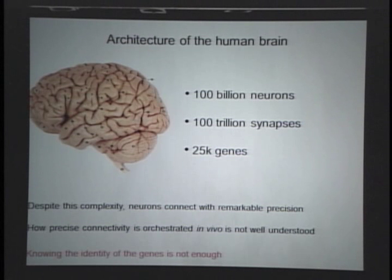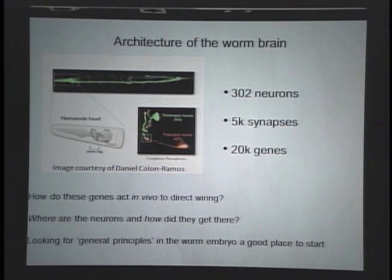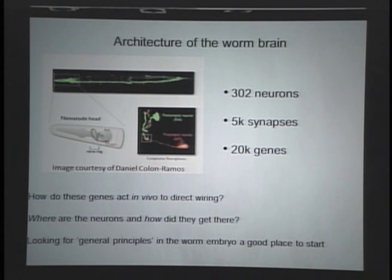Merely cataloging genes and their functions is not going to be enough to understand how this thing wires. What you really want is a movie of how the entire brain forms at subcellular resolution. With today's technology, we can't do this with the human brain. So if you jump down a few orders of magnitude and think about a much simpler organism, C. elegans, this beast has only 302 neurons, about 5,000 chemical synapses, most of which have been mapped at the EM level, and about 20,000 genes. It's transparent and its lineage has been worked out.